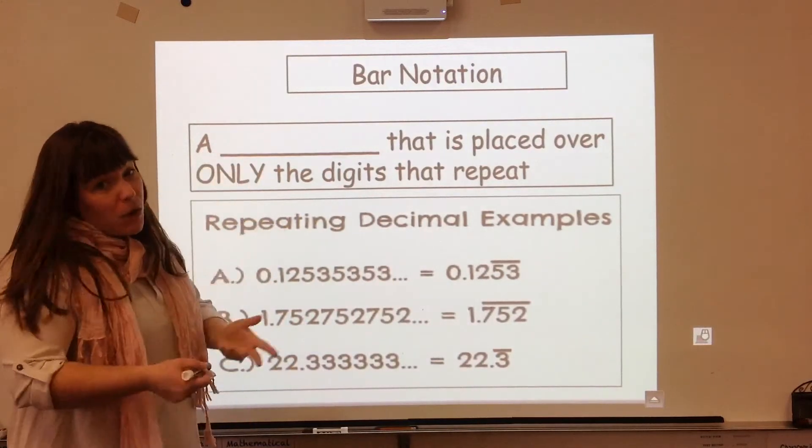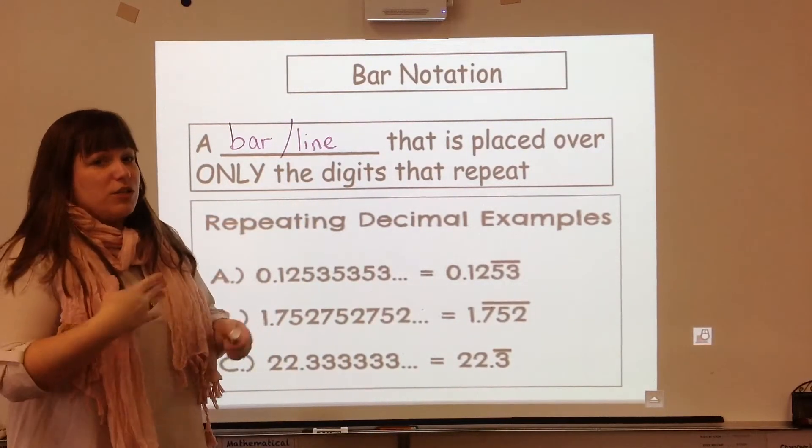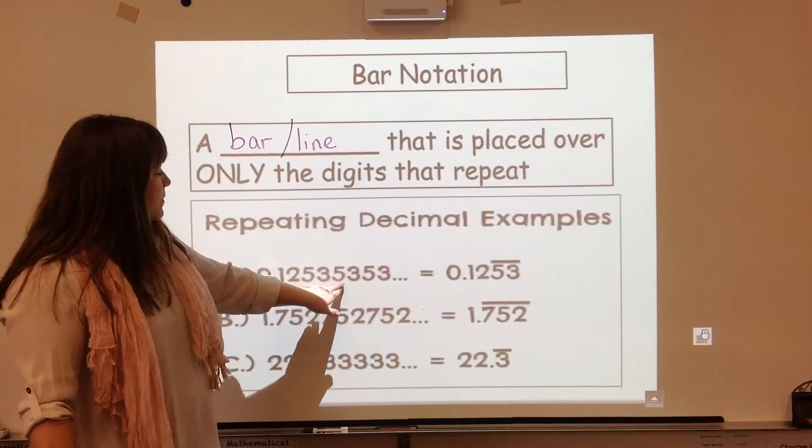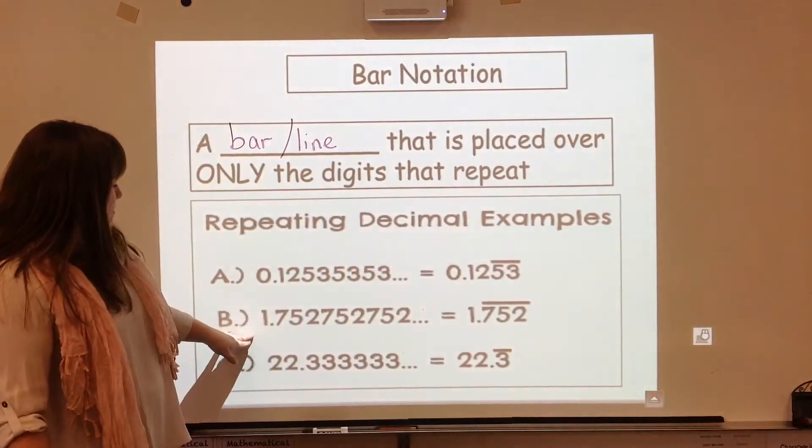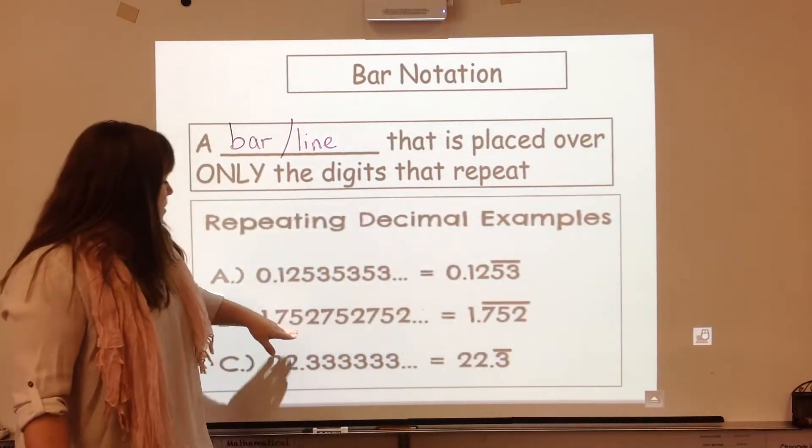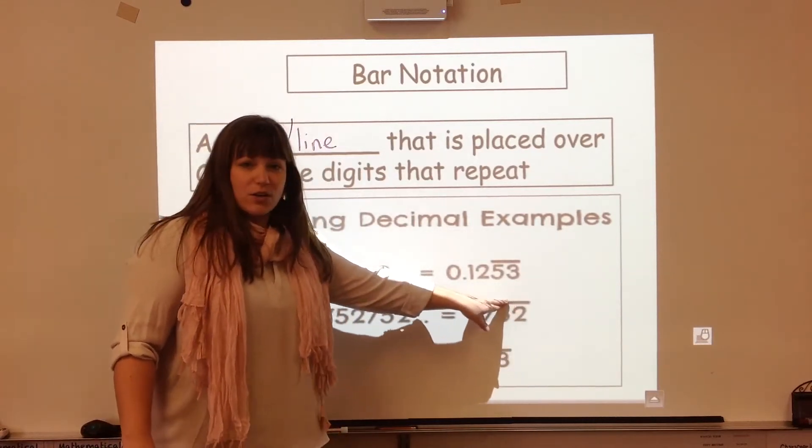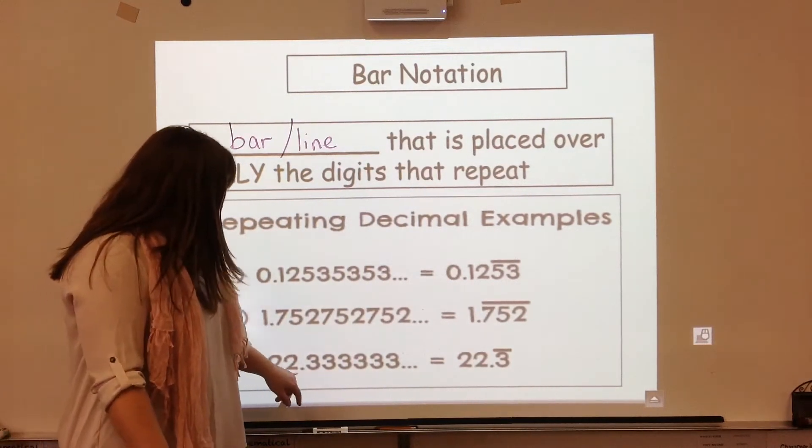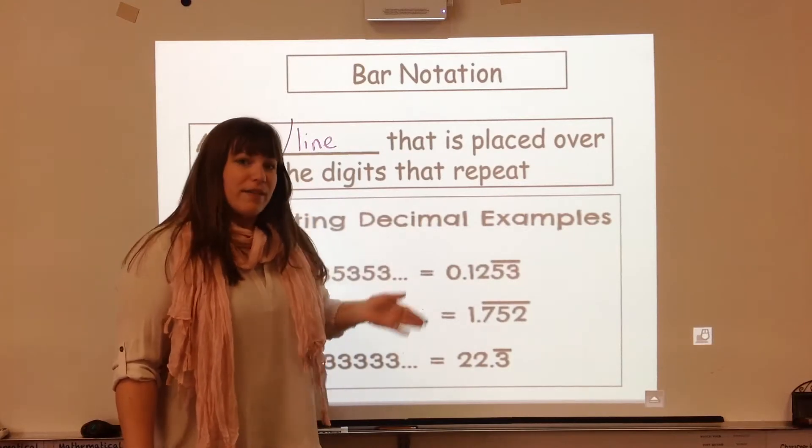Let's talk about how to show that repetition with bar notation. Bar notation is a bar or a line that is placed only over the digits that repeat. If you notice this example A, the one and the two do not repeat, only the five, three, five, three, five, three. So the bar is just above the five and the three. In example B, the whole number is there, but the decimal part repeats every three digits, 752, 752, 752. So that's why the bar is across all three numbers. It could be just one number repeating. In this case, it's 22 and a third. This three you've seen before as a repeating decimal and that three has the bar over it.